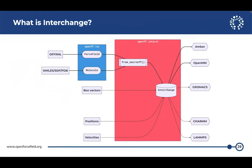Now I'm going to talk about interchange in greater detail. Interchange is the thing that comes out when you combine a force field and a molecule. It contains all of the physics parameters for your simulation as well as positions and box vectors. We can export that to OpenMM and GROMACS for sure, Amber somewhat, and CHARMM and LAMMPS eventually. Our LAMMPS exporter works pretty well now. This is our hub that interfaces with a lot of the other members of the molecular dynamics ecosystem.